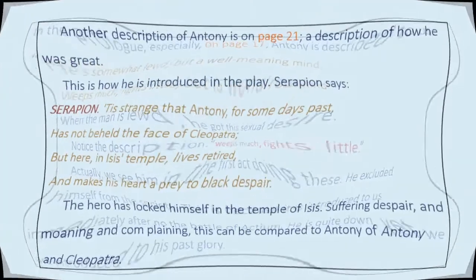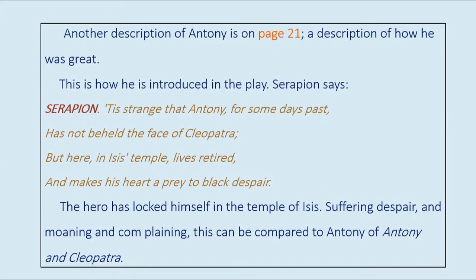Another description of Antony is on page 21 — a description of how he was great, and this is how he is introduced in the play. Serapion says: 'Tis strange that Antony, for some days past, has not beheld the face of Cleopatra, but here in Isis' temple lives retired, and makes his heart a prey to black despair.' The hero has locked himself in the temple of Isis, suffering despair and moaning and complaining. This can be compared to Antony in Antony and Cleopatra.